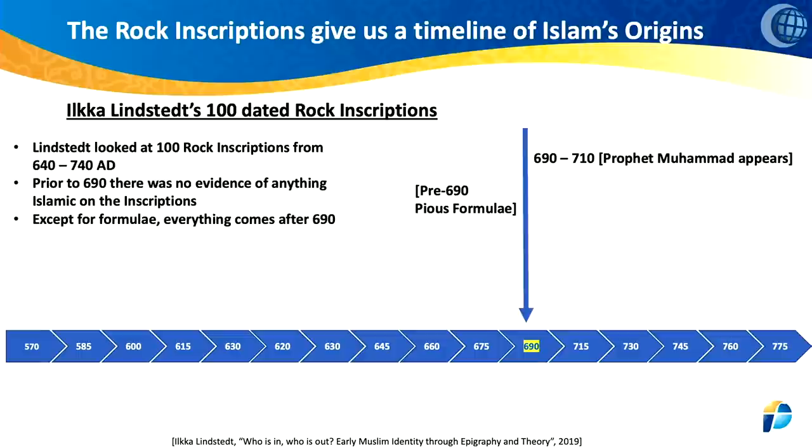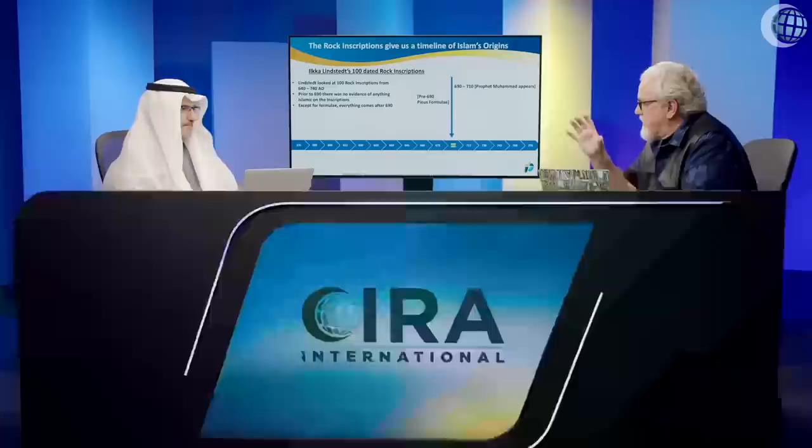But then as he moved on past 690, once he got into about 710 — we're now moving into Abd al-Malik's reign; he dies in 705, and Al-Waleed takes over — if you look at the rock inscriptions, this Muhammad that was introduced on the coins in 691, also on the Caliph of Protocols in 691, and also on the Dome of the Rock in 691-692, they suddenly — this Muhammad starts to appear over and over again. This 'praised one' is starting to become a person.